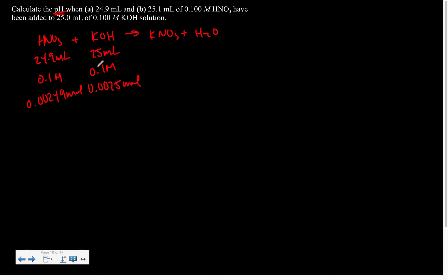So when we look at the number of moles, we realize that nitric acid is limiting and we're going to have that many moles of KOH remaining. Now we're going to take that number of moles and divide by our total volume at this point.